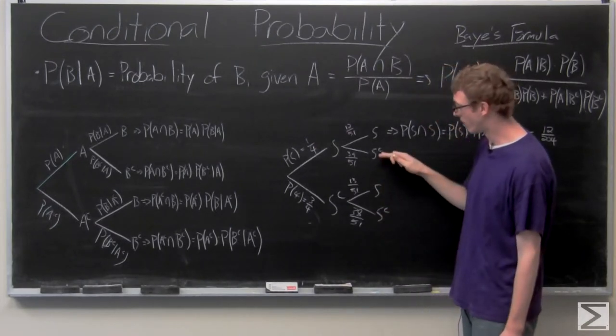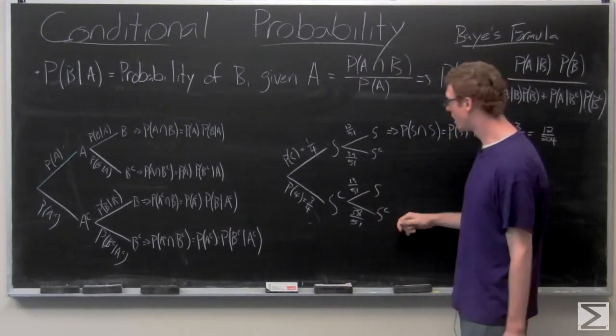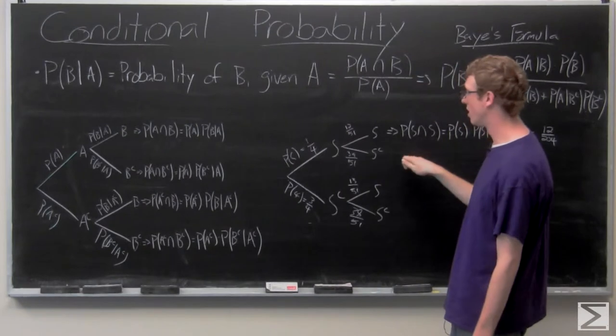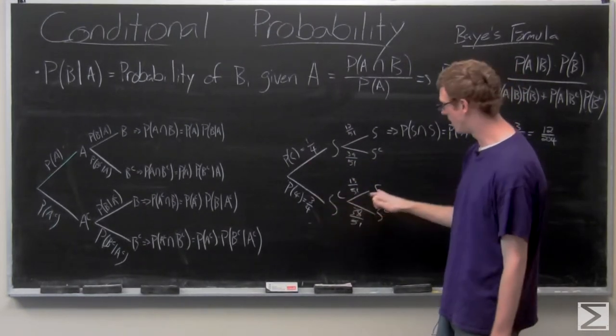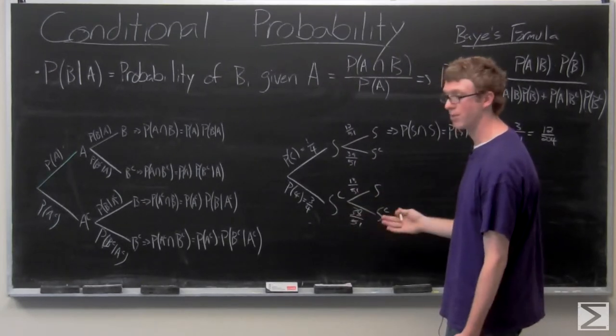I'm just going to go ahead through and write out the probabilities for the tree. And we're going to see exactly what we're calculating: spade and not spade or not spade and spade or not spade and not spade.